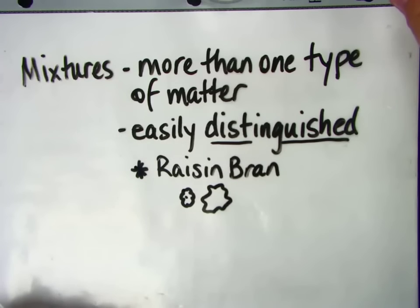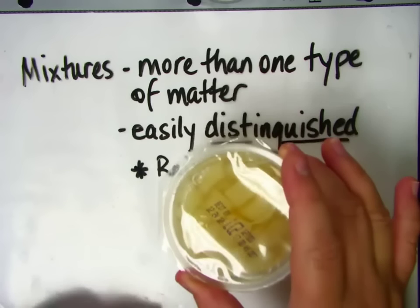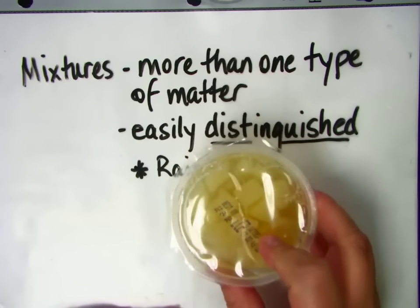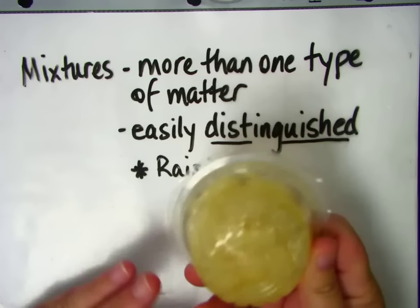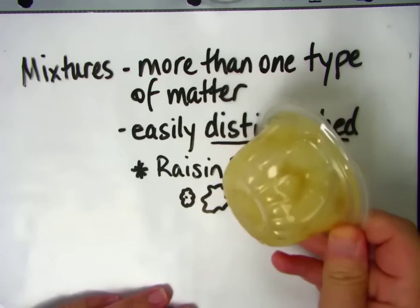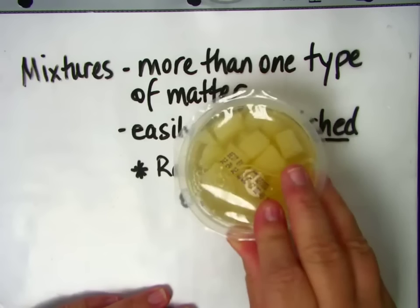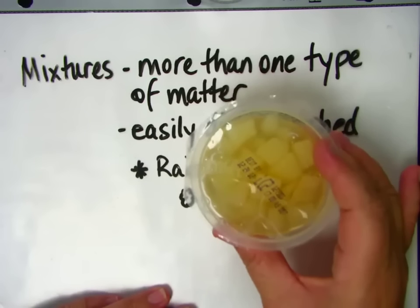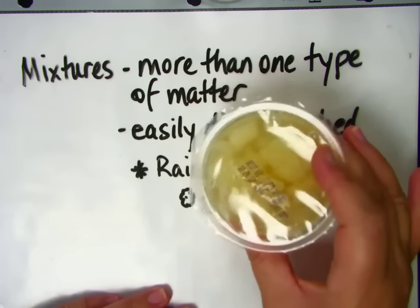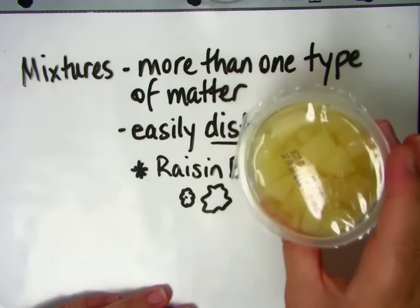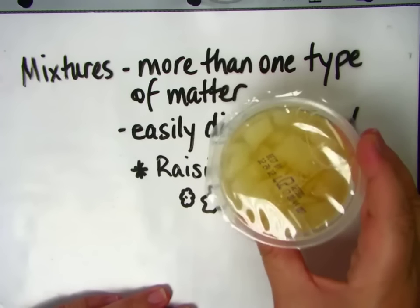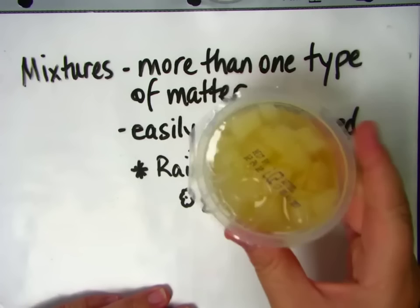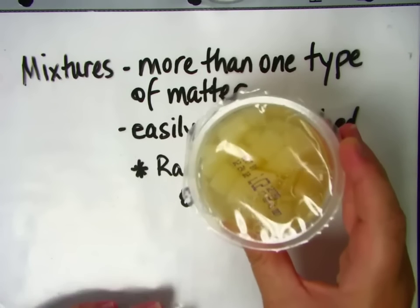Another type of mixture I have here is a little different because it has more than one type of matter, and it also has two different states of matter. One type of matter is a liquid, which is the juice, and the other type of matter is a solid, which is the pears. So that is also a mixture, because there's more than one type of matter and I can easily tell them apart.